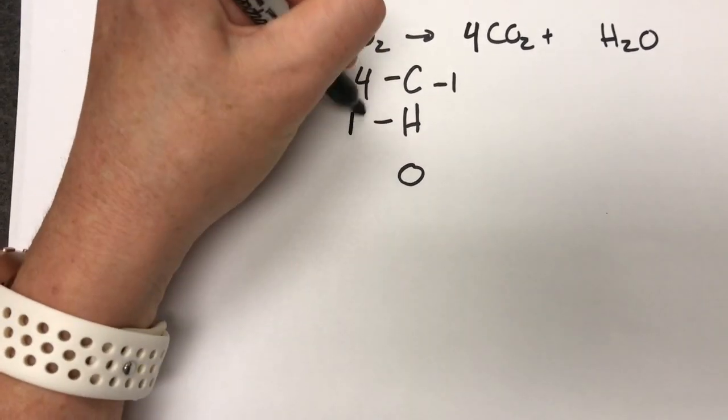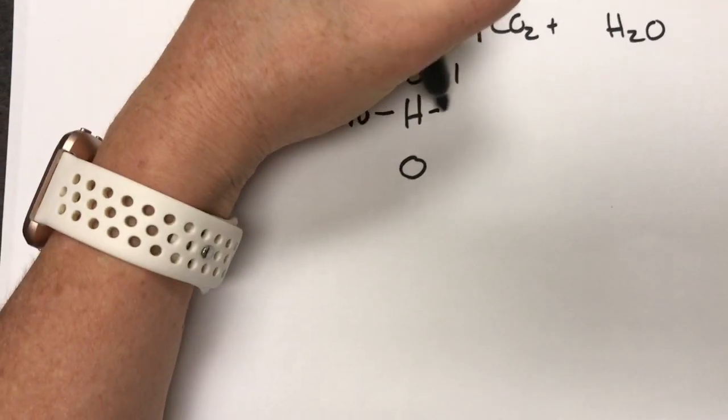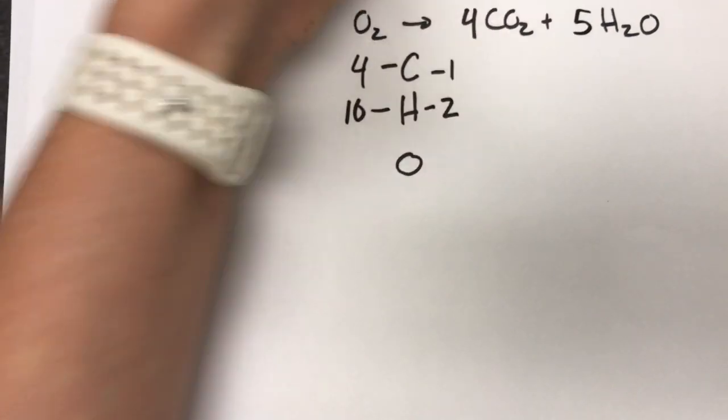Move on to hydrogen. On the left we have 10. On the right hand side we have 2. 10 divided by 2 is 5. So we'll put a 5 there.